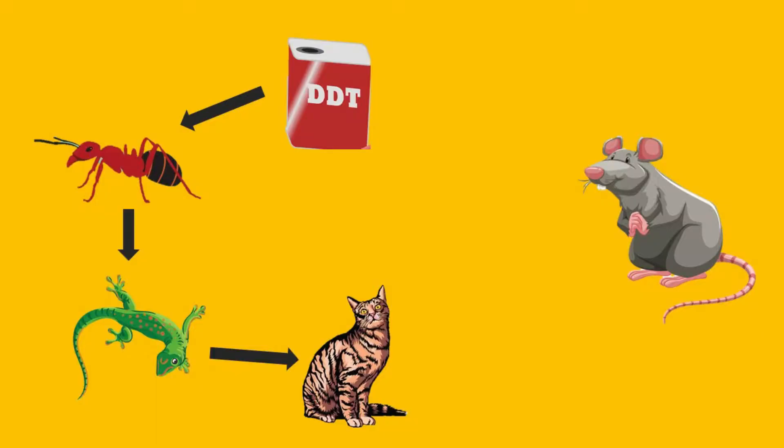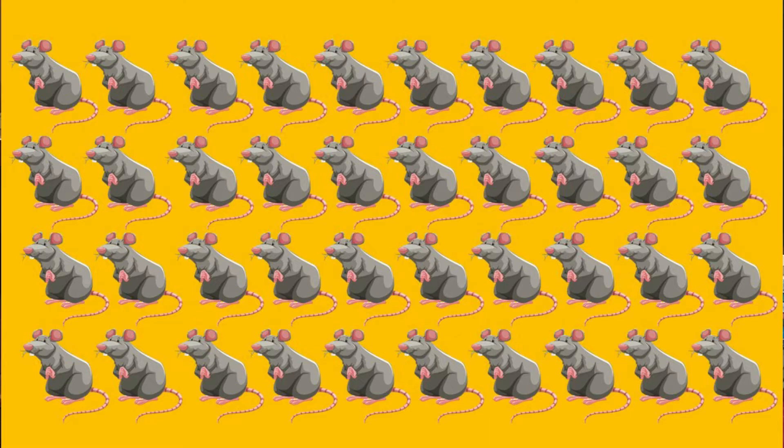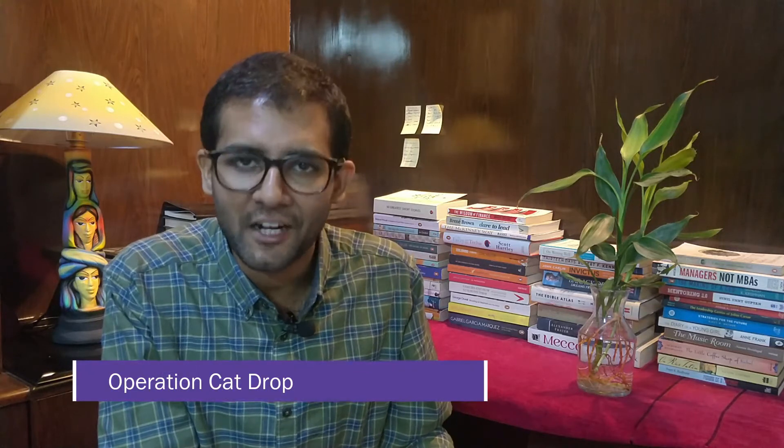What had happened was that the little insects in the Borneo-Sarawak region had consumed DDT. These insects were consumed by the geckos, and the geckos were in turn consumed by the cats. The poisonous DDT had an effect on cats, and the cats started dying rapidly. Because of that, the population of rats started to flourish and there was an outbreak of plague. They had to actually parachute cats and drop them into Borneo, and this was even termed Operation Cat Drop.